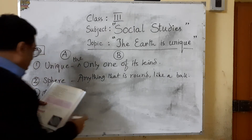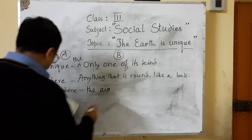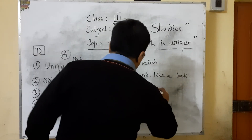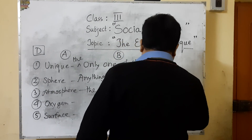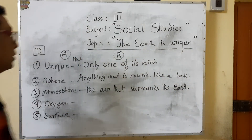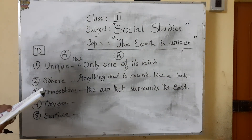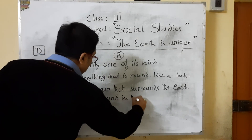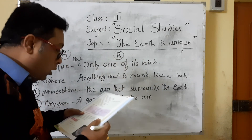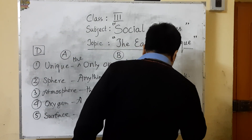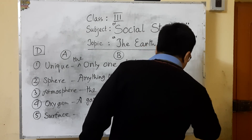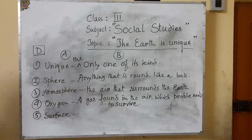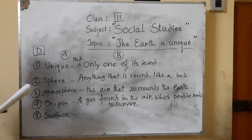Number three: atmosphere — the air that surrounds the Earth. Number four: oxygen — a gas found in the air which people need to survive. Number five: surface — the outer part of something.